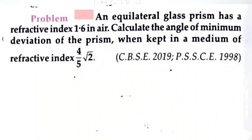An equilateral glass prism has a refractive index of 1.6 in air. Calculate the angle of minimum deviation of the prism when kept in a medium of refractive index 4 upon 5 root 2.